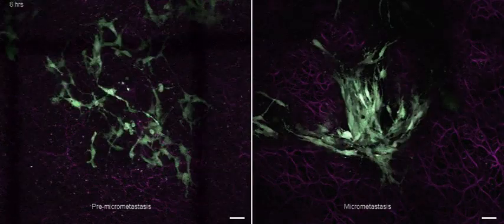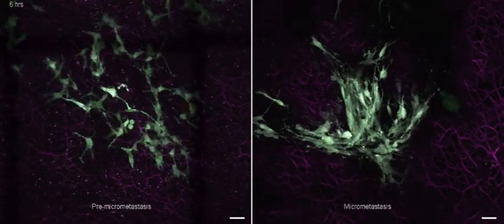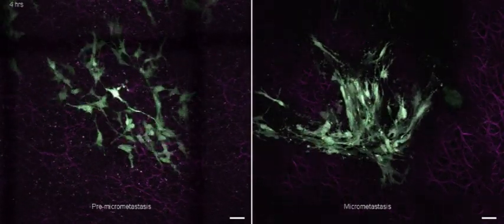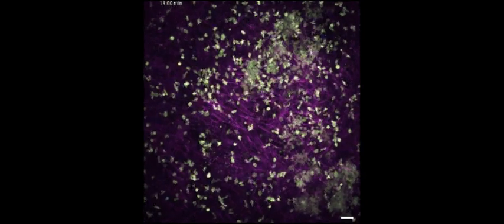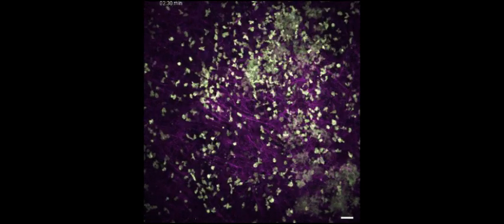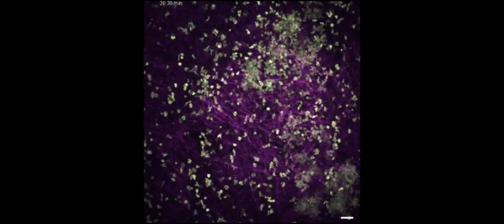If we block the motility in the pre-micrometastatic phase, these pre-micrometastasis cannot grow into a micrometastasis. What you will see in movie four are T cells that are stimulated with OVA peptides.